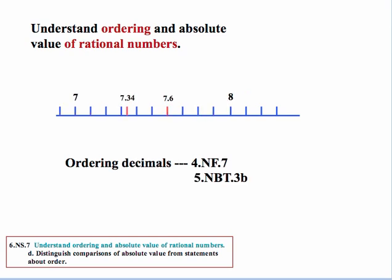Going on to some other types of rational numbers, ordering decimals is covered in grades 4 and 5. In grade 4, it's in standard 4.NF.7. And in grade 5, it's in standard 5.NBT.3B. Where again, students learn to order decimals such as 7.6 compared to 7.34.